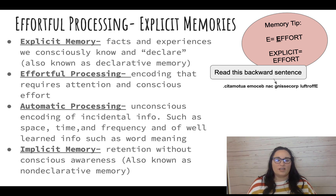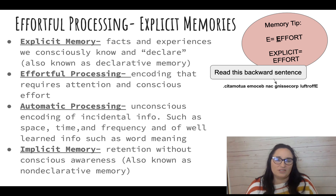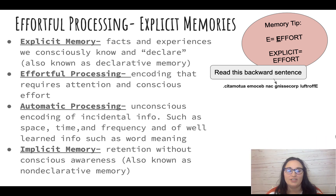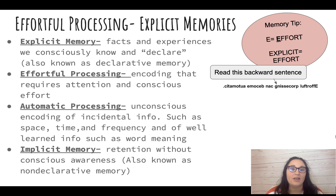Along with this are two types of memory. Explicit memory refers to facts and experiences we consciously know and declare — also known as declarative memory. Implicit memory is retention without conscious awareness. For example, riding a bike or driving a car could be implicit memory — we do those things unconsciously. We don't need conscious awareness of how to pedal. Whereas in explicit memory, you do need that conscious thought process to retrieve.